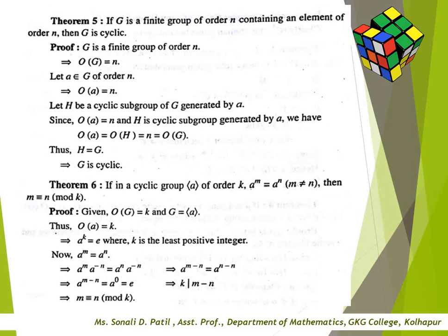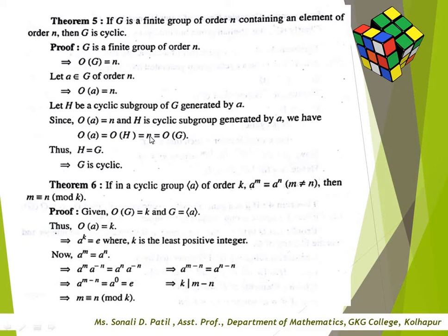Next theorem: if G is a finite group of order n containing an element of order n, then G is cyclic. Proof: G is a finite group with o(G) = n. Let A ∈ G with o(A) = n, and let H be the cyclic subgroup generated by A. Since o(A) = n, we have o(H) = n = o(G), therefore H = G, which means G is cyclic.